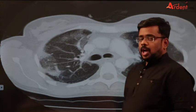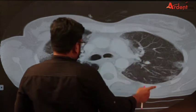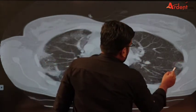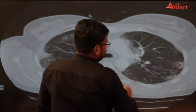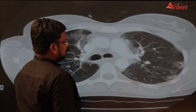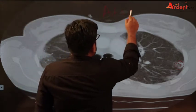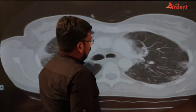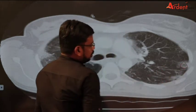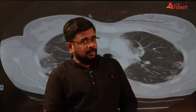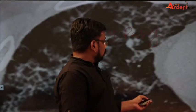The next finding is the atoll sign. If you see consolidation in the periphery and ground glass opacities in the center, this is called the atoll sign. Looking at the picture more clearly, you can see the peripheral opacities with ground glass opacities in the center. So there are four CT chest findings: ground glass opacity, consolidation, atoll sign, and crazy paving.